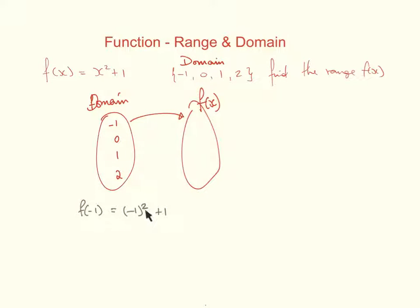So that becomes (-1)² + 1. So what I'm actually doing is replacing this x with -1. And because the x was squared, I will square it. So this now gives me 1 + 1, which gives me 2. So that tells me that my first value there, -1, is mapped onto 2.